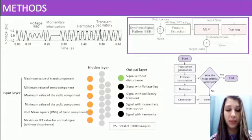The feature extraction process was made using a Hodrick-Prescott filter, the fast Fourier transform, and the root mean square value. Both multilayer perceptron and genetic algorithm were implemented using the PyGAD library in Python.